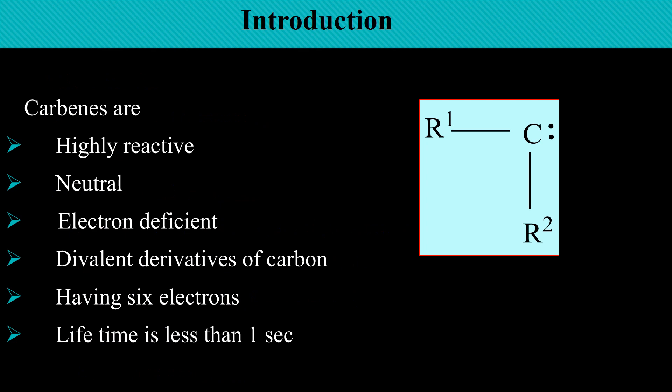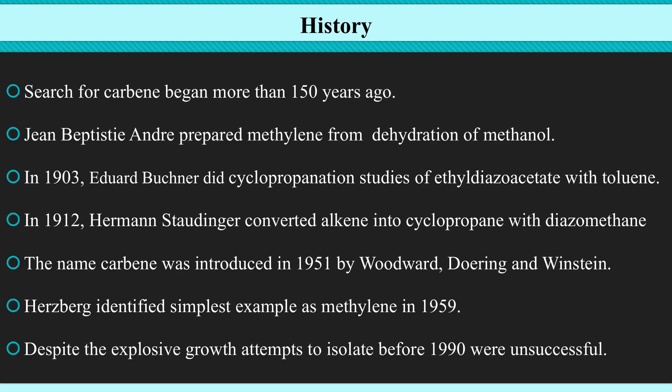Carbenes are highly reactive, neutral, electron deficient, divalent derivatives of carbon. They have six electrons and their lifetime is less than one second. The search for carbene began more than 150 years ago. It was Jean-Baptiste Dumas who prepared methylene for the first time from dehydration of methanol, using a dehydrating agent like P2O5.